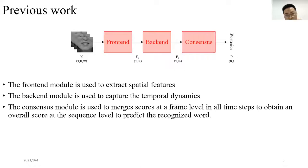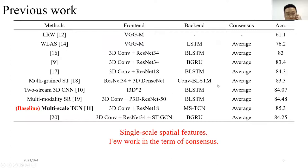Since LRW was released, numerous new models have been proposed. Most deep learning based models usually consist of a front-end module, a back-end module, and a consensus module. The front-end module is used to extract spatial features. The back-end module is used to capture the temporal dynamics of lip movements. The consensus module is used to merge scores at a frame level in all time steps to obtain an overall score at a sequence level to predict the recognized word.